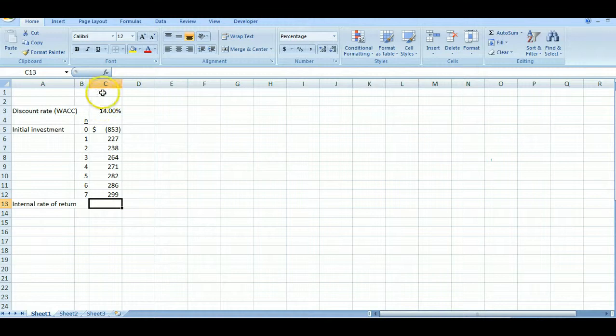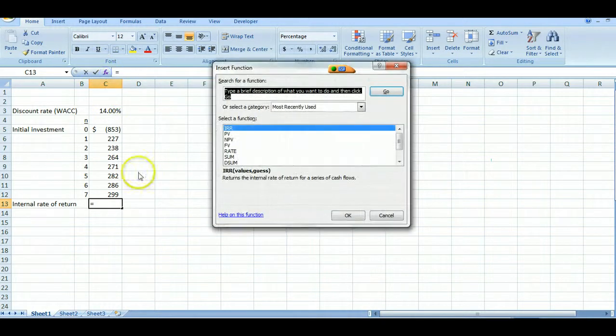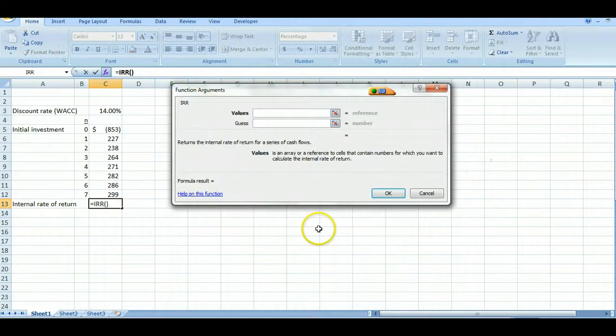So in Excel it's quite simple. You simply put your cursor in the box that you want the internal rate of return to go into and you click up above where it says insert function and it opens up this insert function box. Typically you would just type your function in here and click go and it would bring it up here. It's already here and then you highlight this and you click OK and then it opens up a function box for IRR.